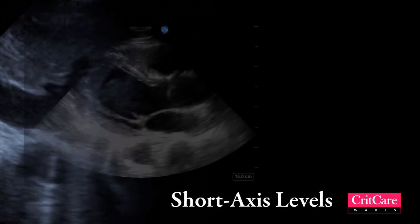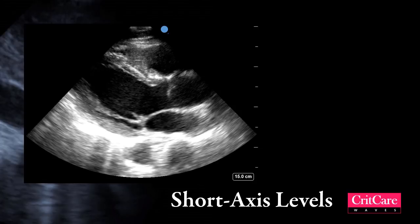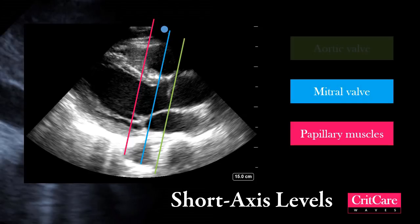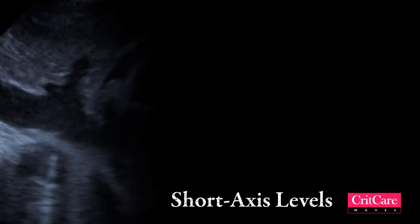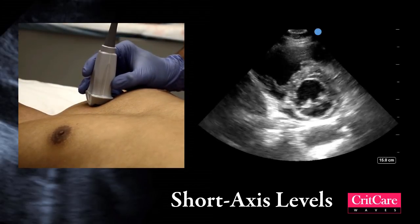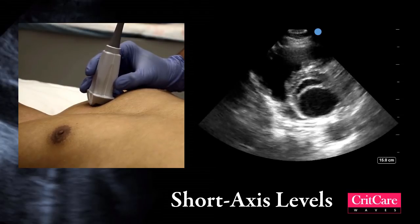There are three different levels at which the parasternal short axis views are obtained. Imagine the parasternal long axis in 3D — we rotated the probe 90 degrees, so we are now looking at the heart in a plane perpendicular to the long axis. The views are at the level of the papillary muscles, the mitral valve, and the aortic valve. To obtain the different short axis views, fan the probe cranially and you should see all three views if you go slowly.